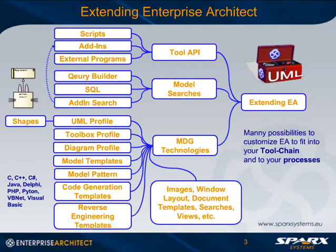With diagram profiles, you can define your own diagram types and tell Enterprise Architect how it should behave when you drag and drop a model element onto that diagram. With model templates, you can define a predefined structure which can easily be reused when you create a model structure within Enterprise Architect — this helps you create a model with a few clicks. You can also use model patterns, which are well known as UML design patterns, also contained out of the box in Enterprise Architect. You can create your own model patterns to build parts of your models.